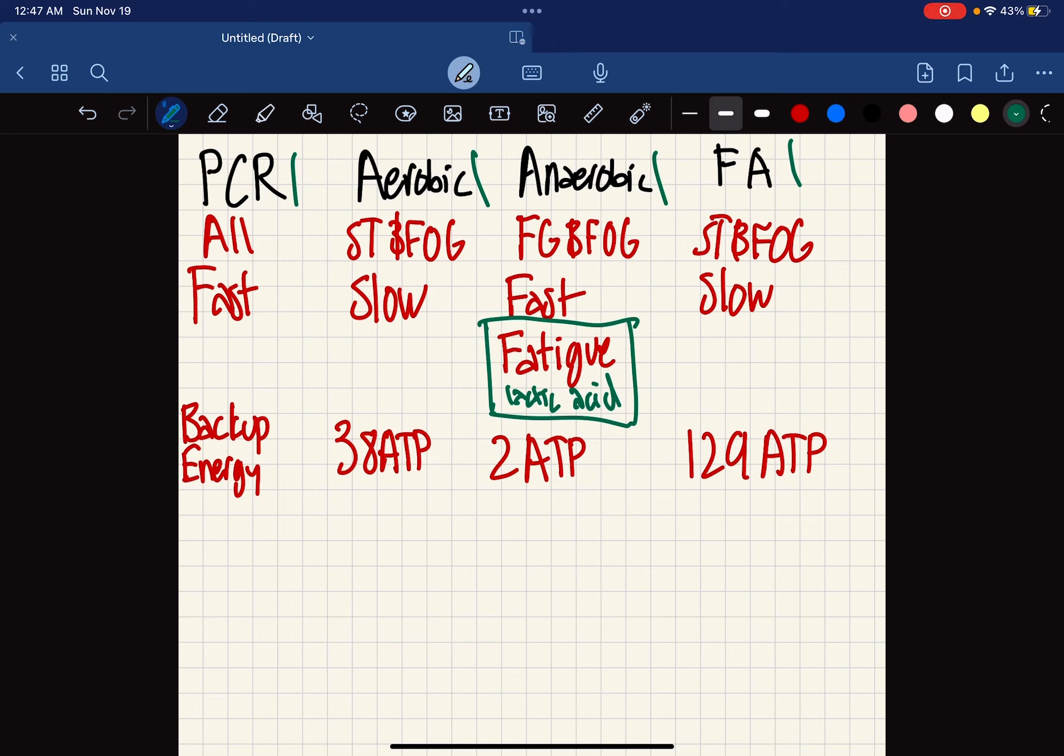The last row is their energy sources. The phosphocreatine is backup energy. The aerobic cell respiration is 38 ATP. Anaerobic glycolysis is 2 ATP, and fatty acid breakdown is 129 ATP.